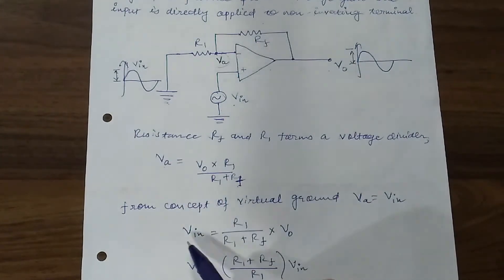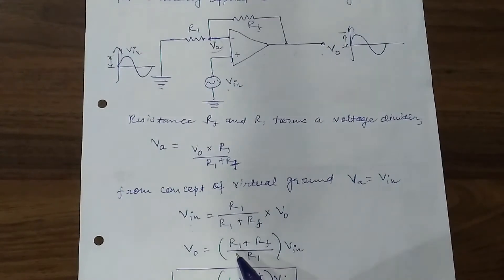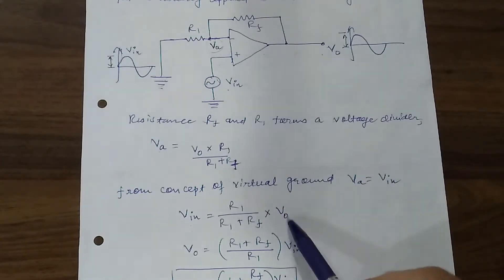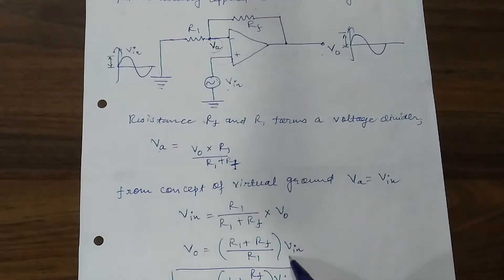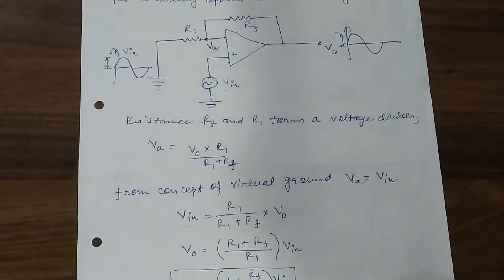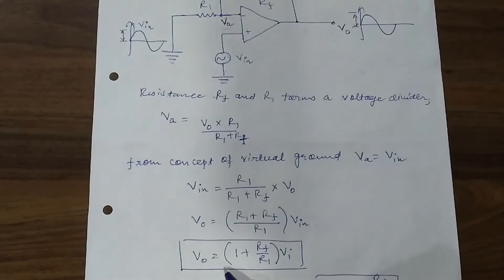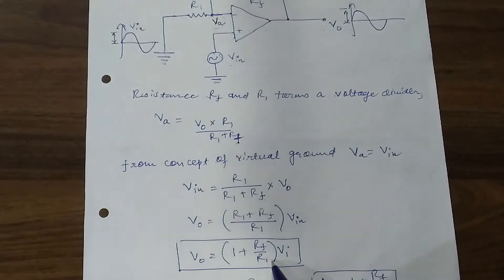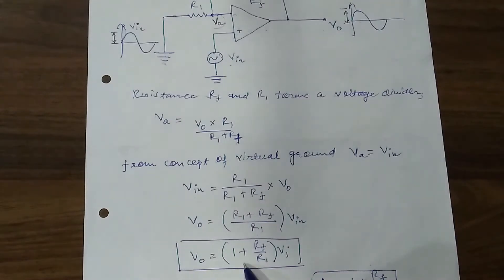VA has been replaced by the input voltage VIN. If we make VO the subject, then VO equals R1 plus RF divided by R1, multiplied by VIN. From this equation, we can write VO equals 1 plus RF divided by R1, multiplied by VIN. This equation is most commonly considered as the non-inverting amplifier equation for the output voltage.